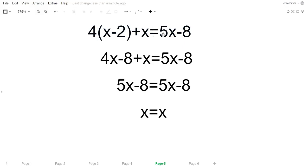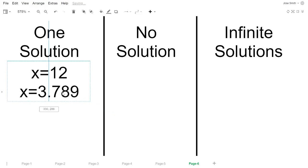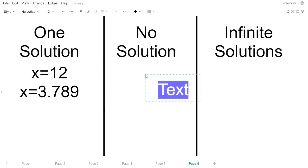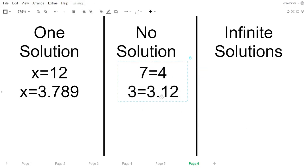So any value of x that you plug in here will give you the same thing on one side on the other side. So quick recap: when you have one solution, it's the things that you guys have been seeing, like x equals 12, x equals 3.789, whatever the case. One solution. When you get no solutions, you get something like what we got before, like 7 equals 4 or 3 equals 3.12, or something like a statement that just isn't true. That means that there is no solution.